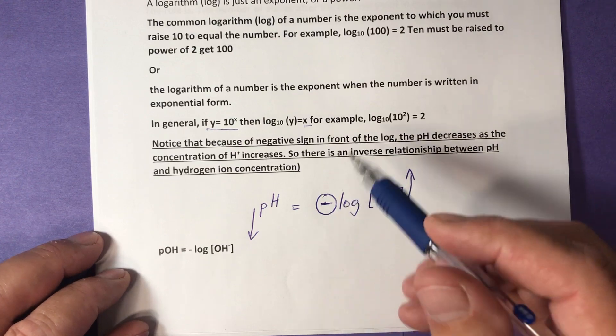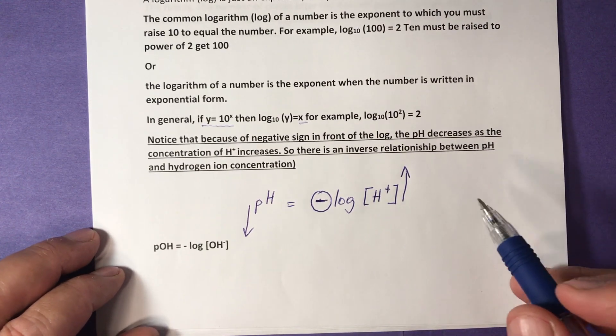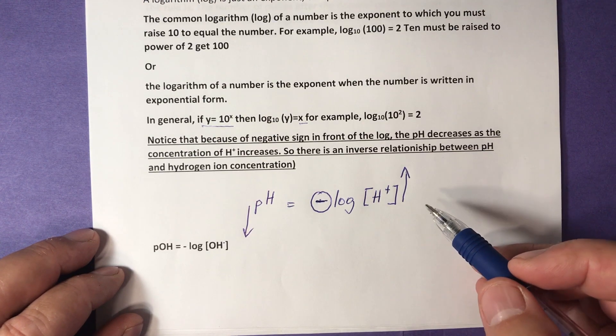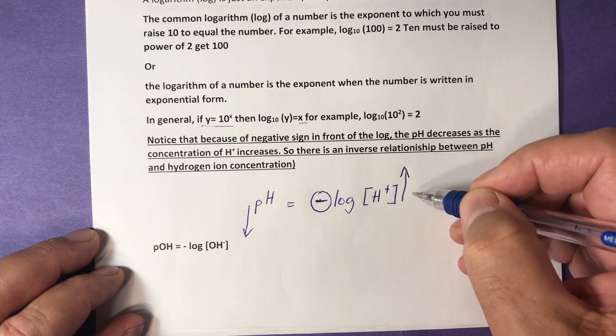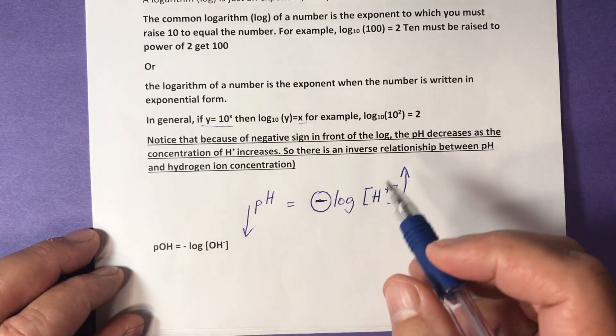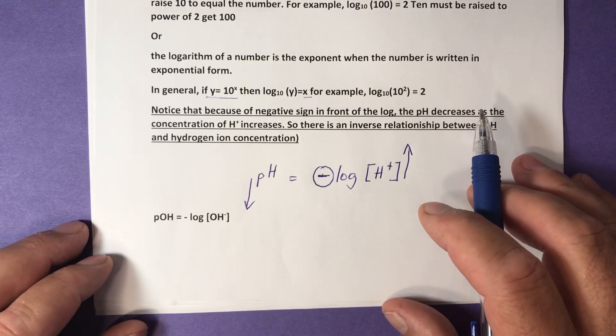Notice that because of the negative sign in front of the log, the pH decreases as the concentration of hydrogen ions increases. So hydrogen ions go up, pH goes down. There is an inverse relationship between pH and hydrogen ion concentration.